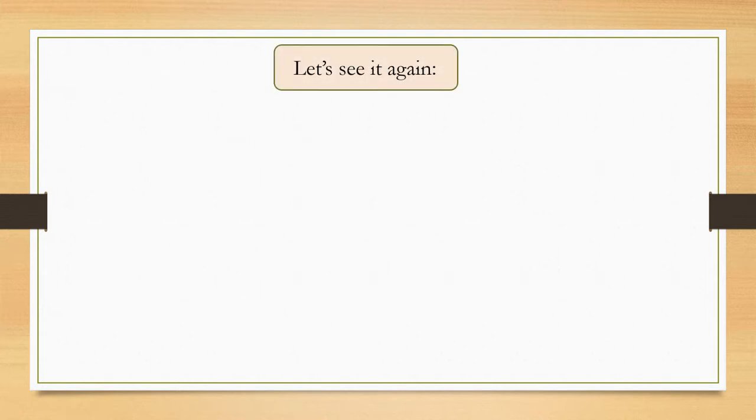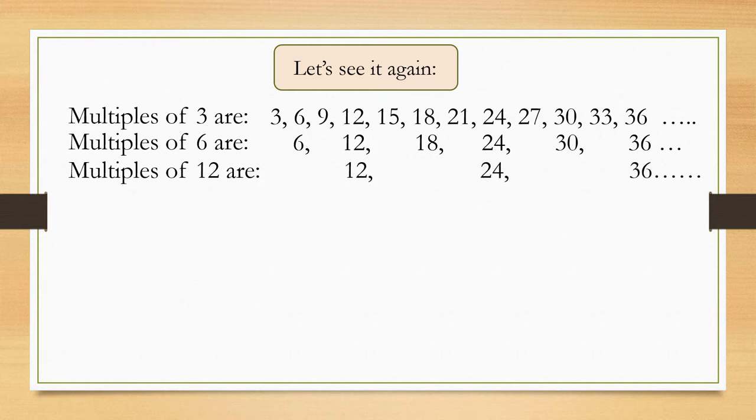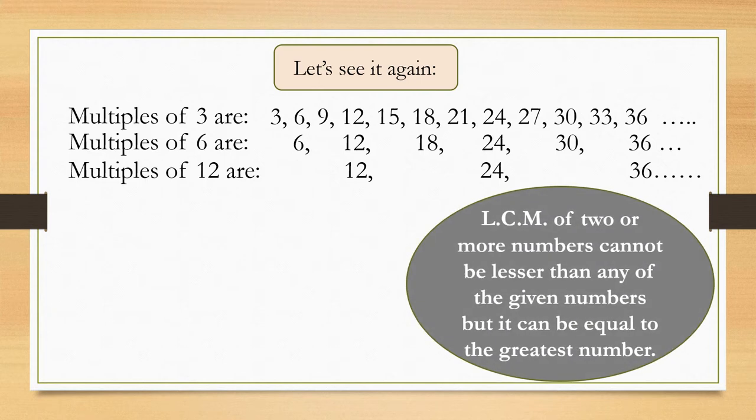Let's see it again. Multiples of 3 are 3, 6, 9, 12, 15, 18, 21, 24, 27, 30, 33, 36 and so on. Multiples of 6 are 6, 12, 18, 24, 30, 36 and so on. Multiples of 12 are 12, 24, 36 and so on.